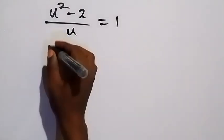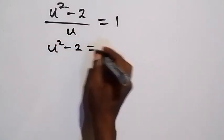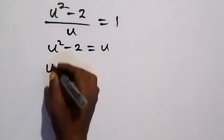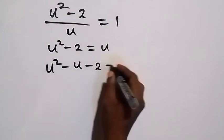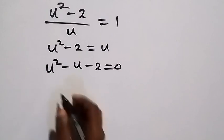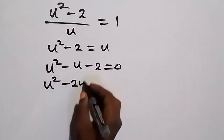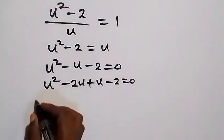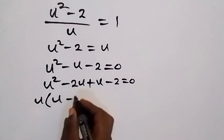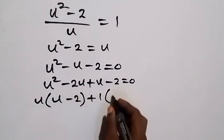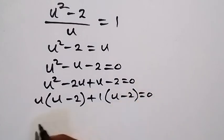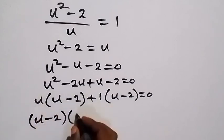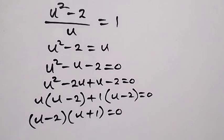We solve this equation by cross-multiplying: u squared minus 2 equals u times 1. Then rearranging, bringing everything to one side to form a quadratic equation, we have u squared minus u minus 2 equals 0. We factor this quadratic as u squared minus 2u plus u minus 2 equals 0. Grouping: u into bracket u minus 2, plus 1 into bracket u minus 2 equals 0. Taking u minus 2 as the common factor, we get u minus 2 into bracket u plus 1 equals 0.